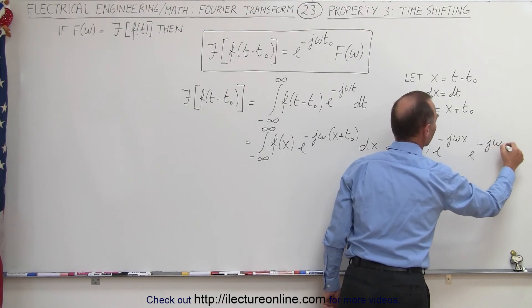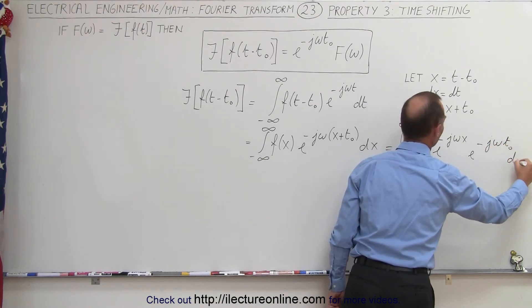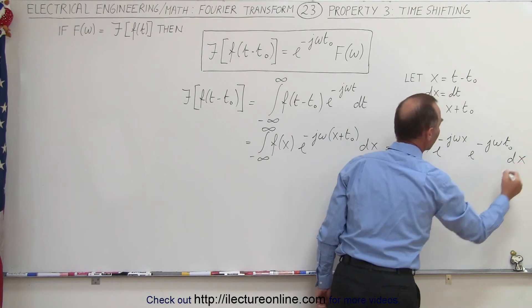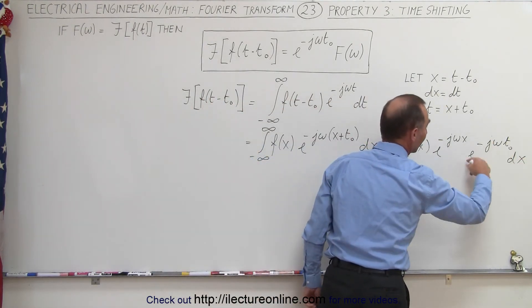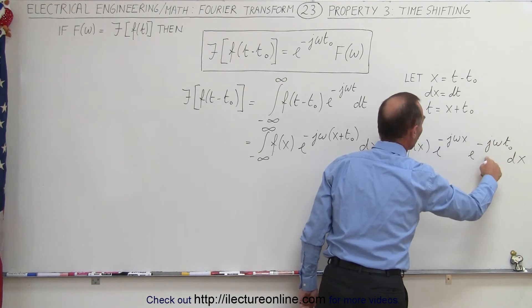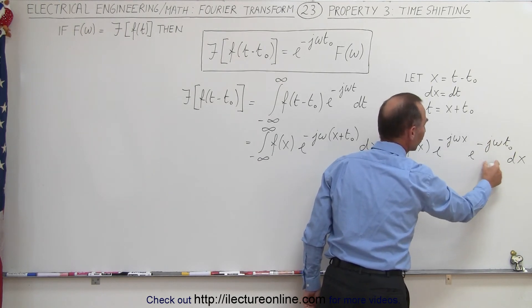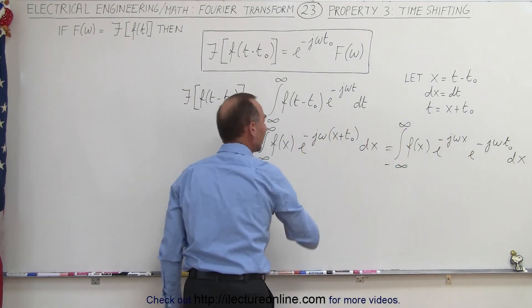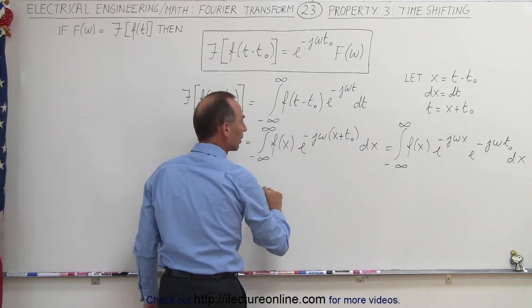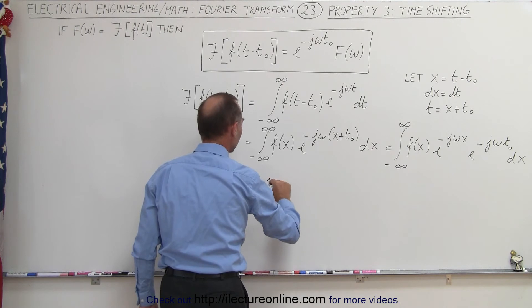And then we have a dx instead of dt. And realizing that this here now is just a constant quantity, which it's not a function of x, it's a function of omega t sub-naught, so we can go ahead and take that outside the integral sign, so this becomes equal to e to the minus j omega t sub-naught.